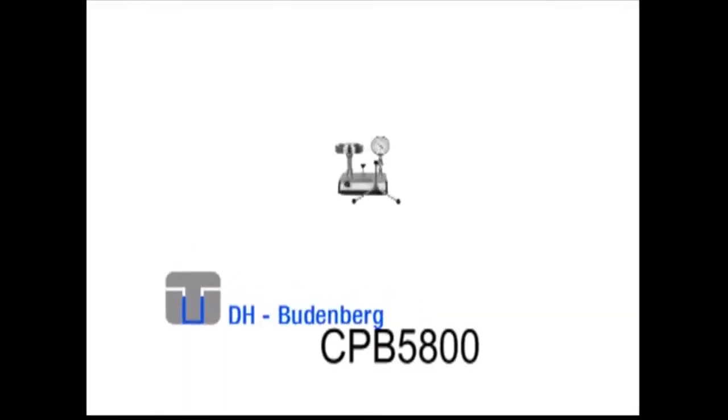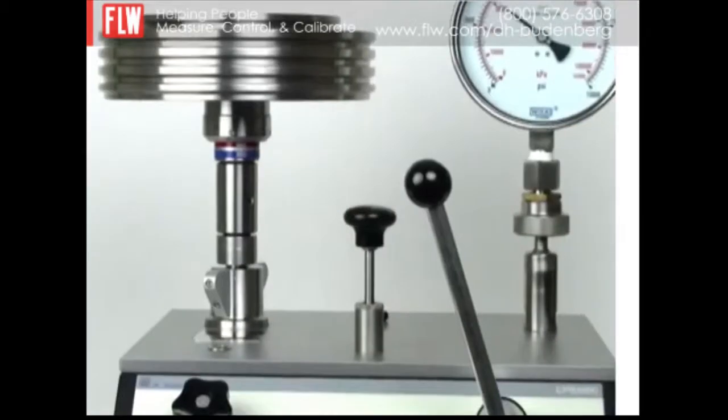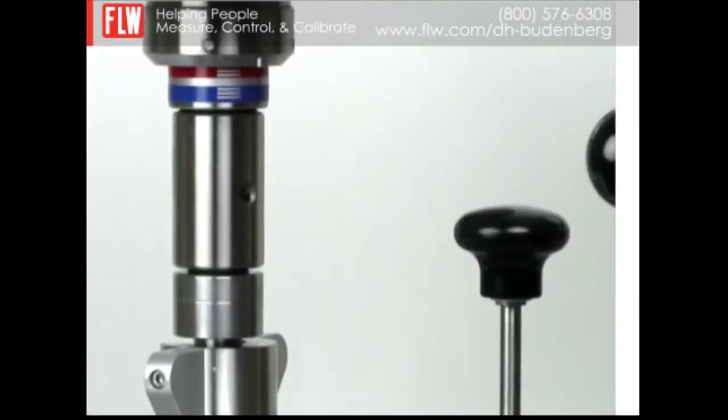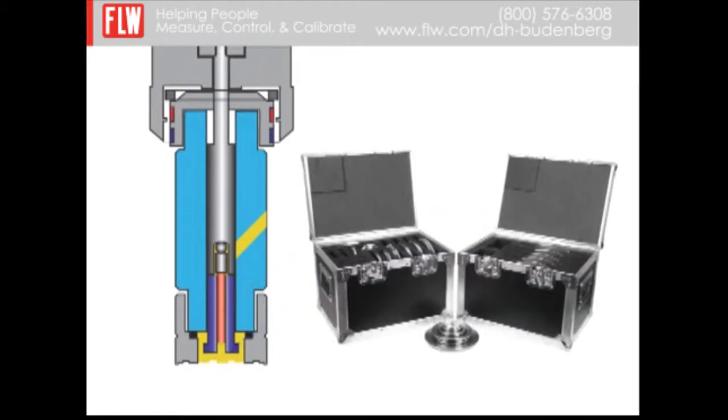The DH Budenberg CPB 5800 has notable features that are both elegant and beneficial. First among these is the dual piston cylinder assembly with two pistons of different cross-sectional areas that can generate two different pressures with each mass loading. This extraordinary feature extends the range of the CPB 5800 to an extent otherwise only possible with two separate pistons and two separate mass sets.